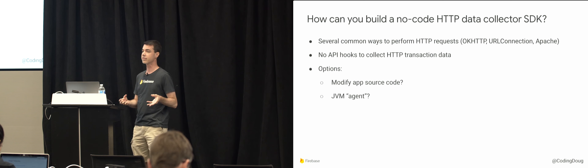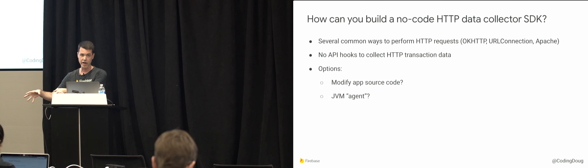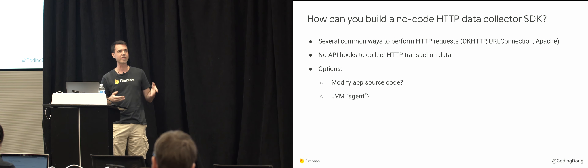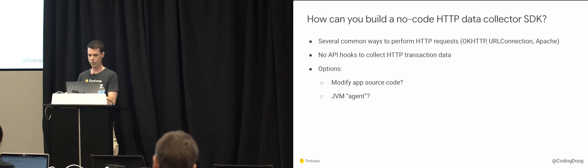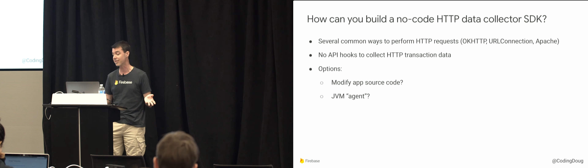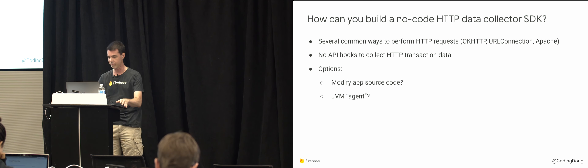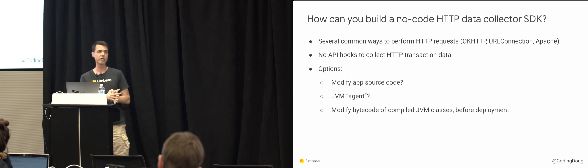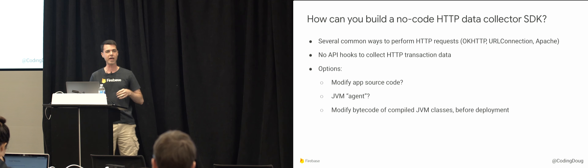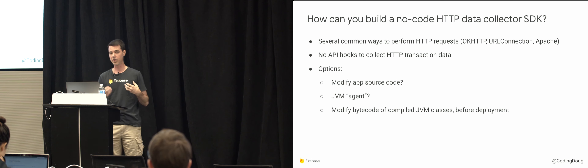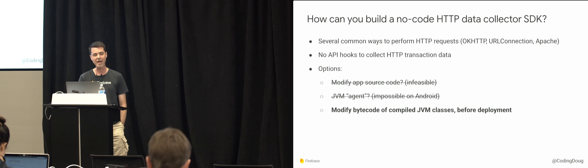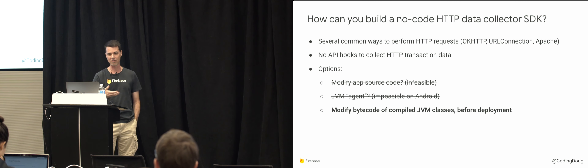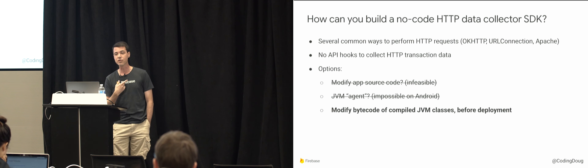It's important to do this before deploying because your APK is basically immutable once you ship it. You can't modify the app's source code — no developer would give you access to all their source code and let you change it. There's no agent. So the third option — looking at all the classes in the entire app and changing them at build time before they go into the final APK — is really the only viable option.